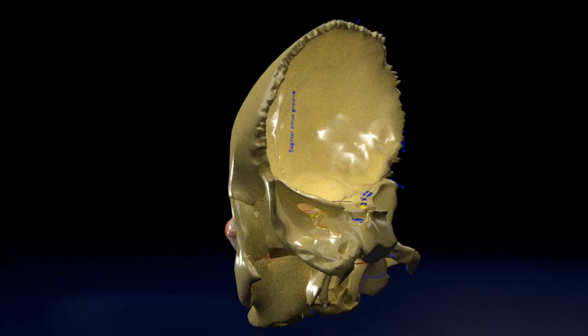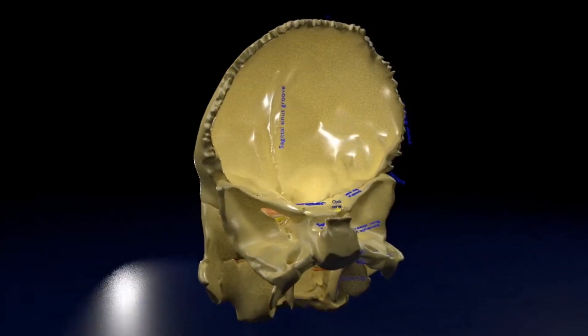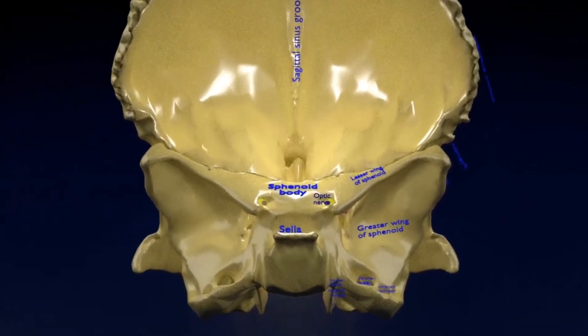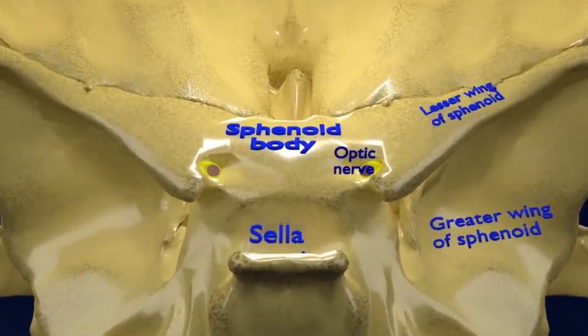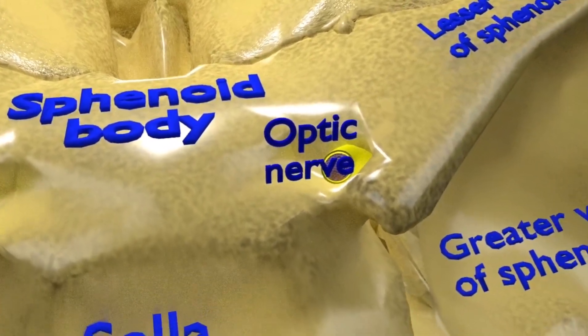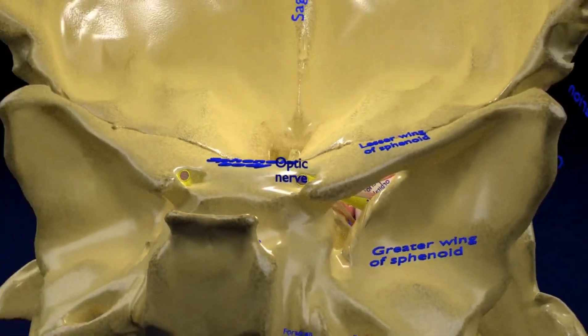In the posterior view, here you can see one more bone forming the orbit, the sphenoid bone which I told you about, with its greater and lesser wings, and optical canal in the center.